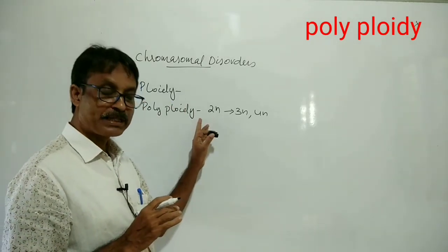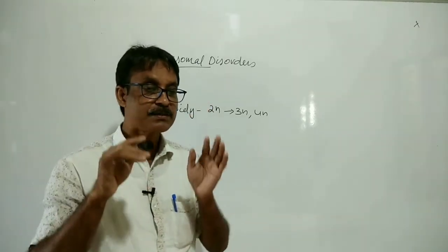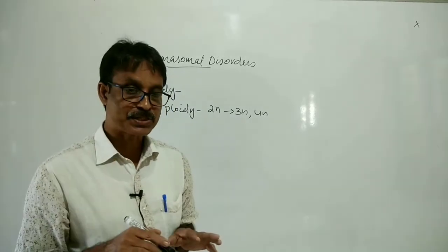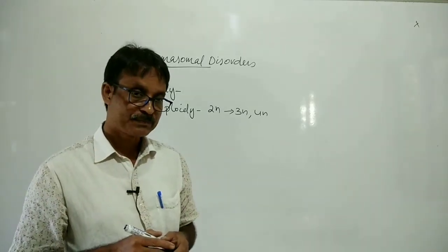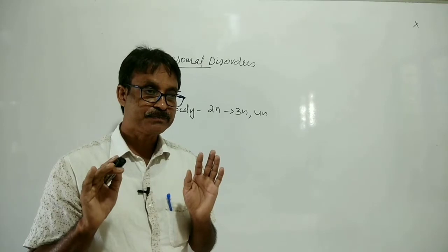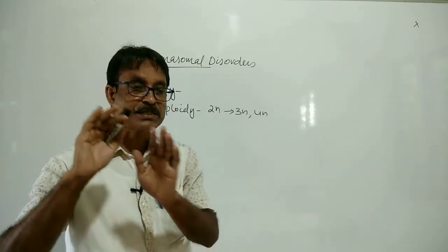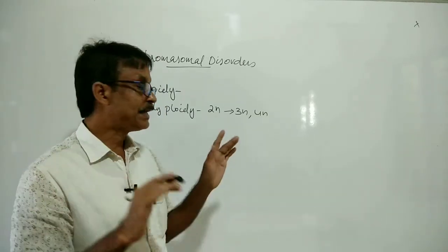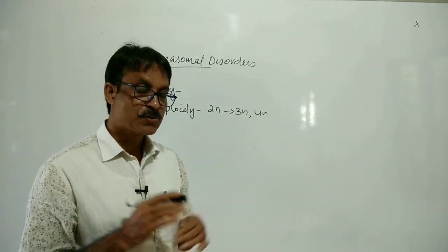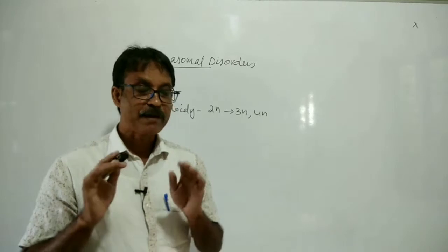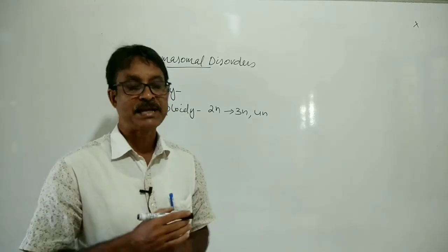Polyploidy is due to a failure in cytokinesis after telophase during cell division. So what is the reason for polyploidy? The failure of cytokinesis after telophase.